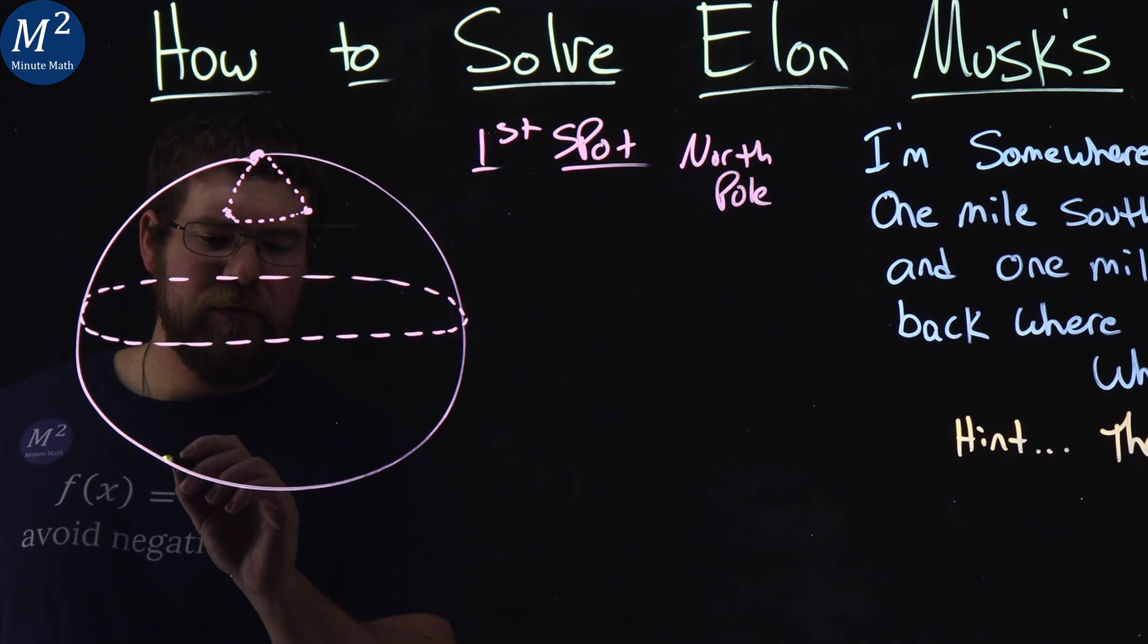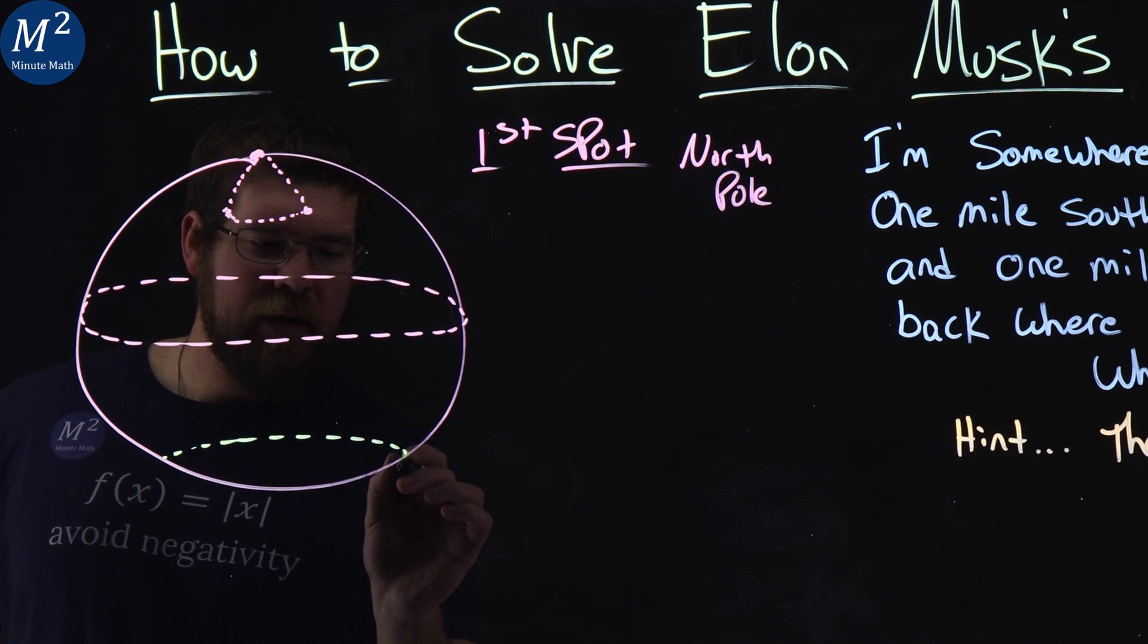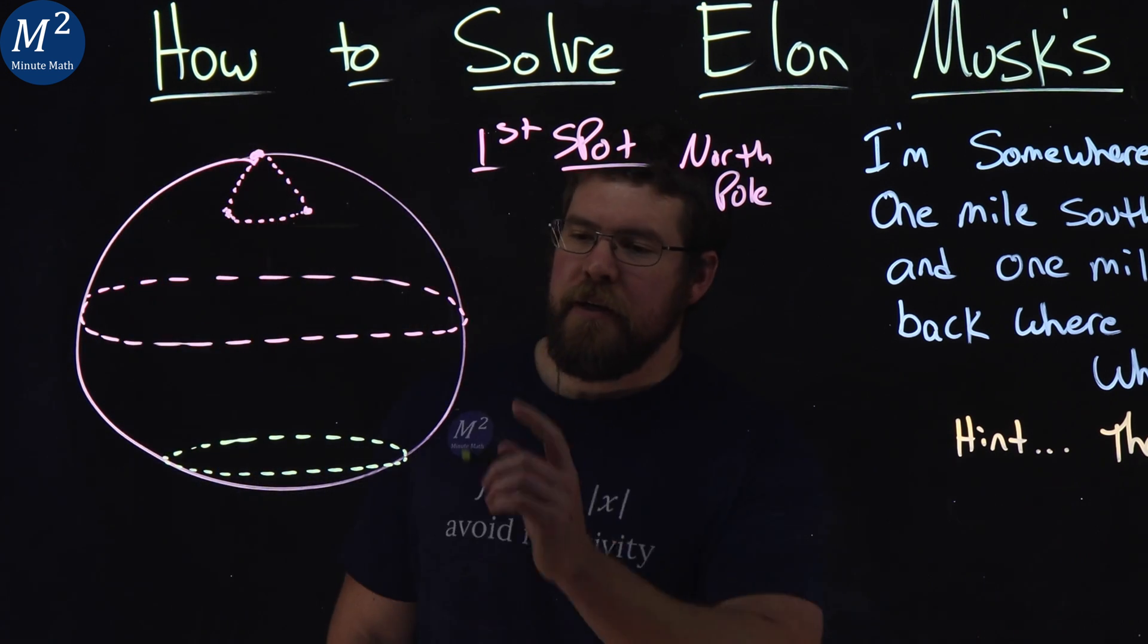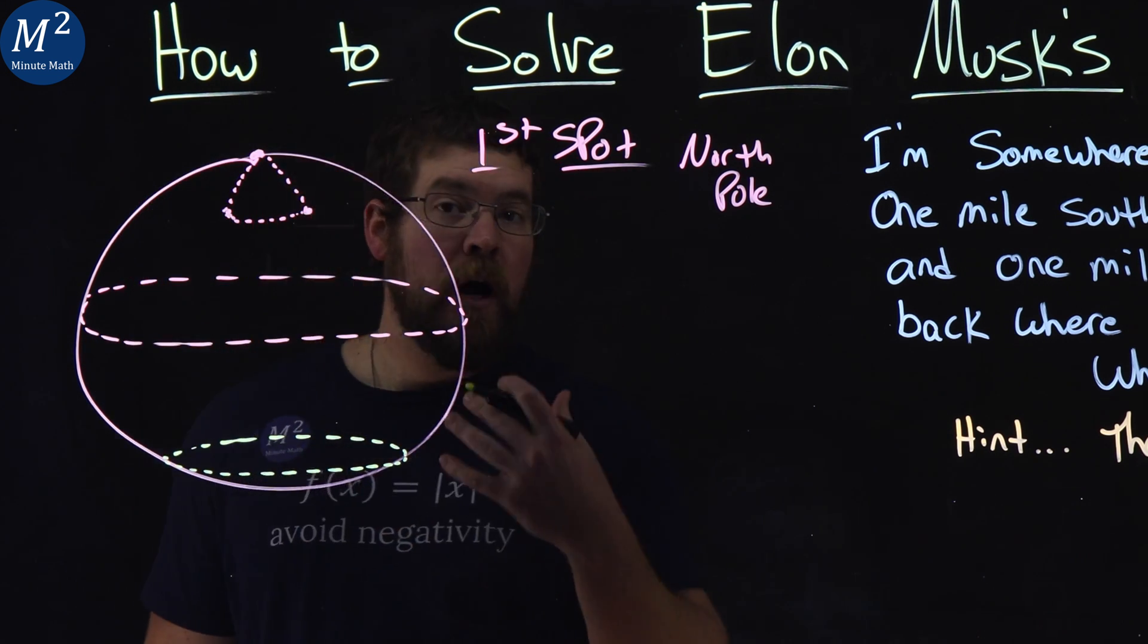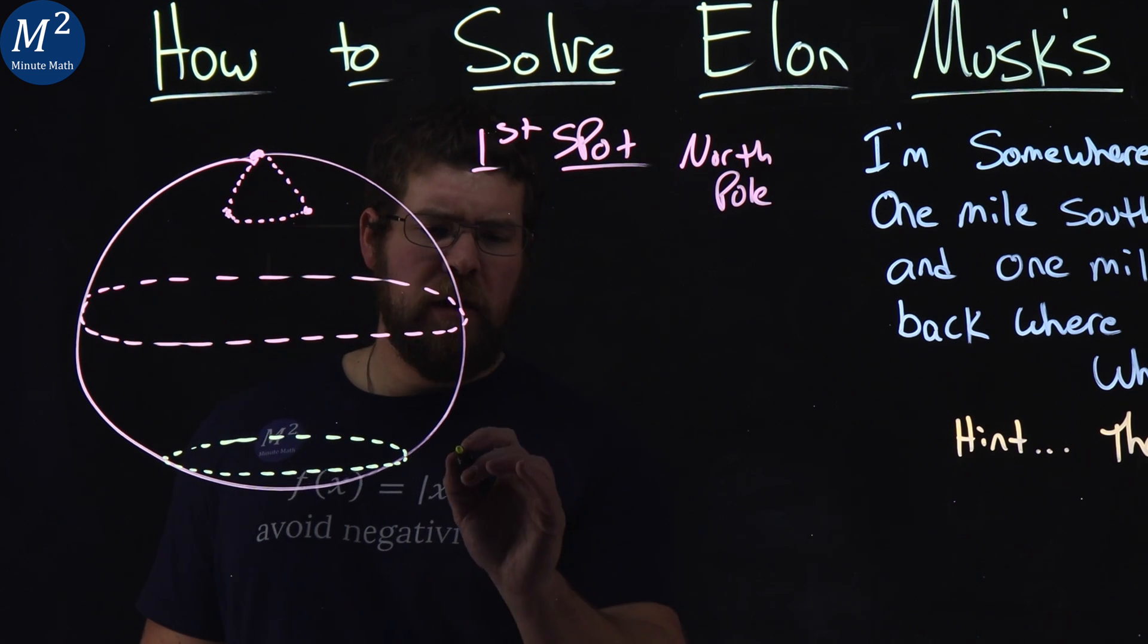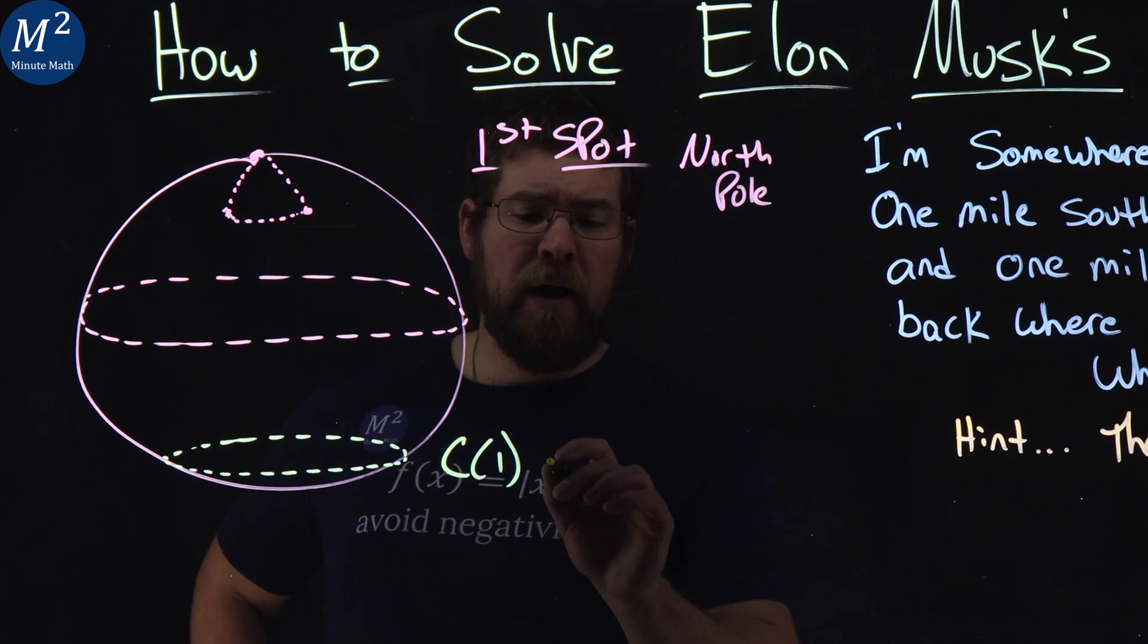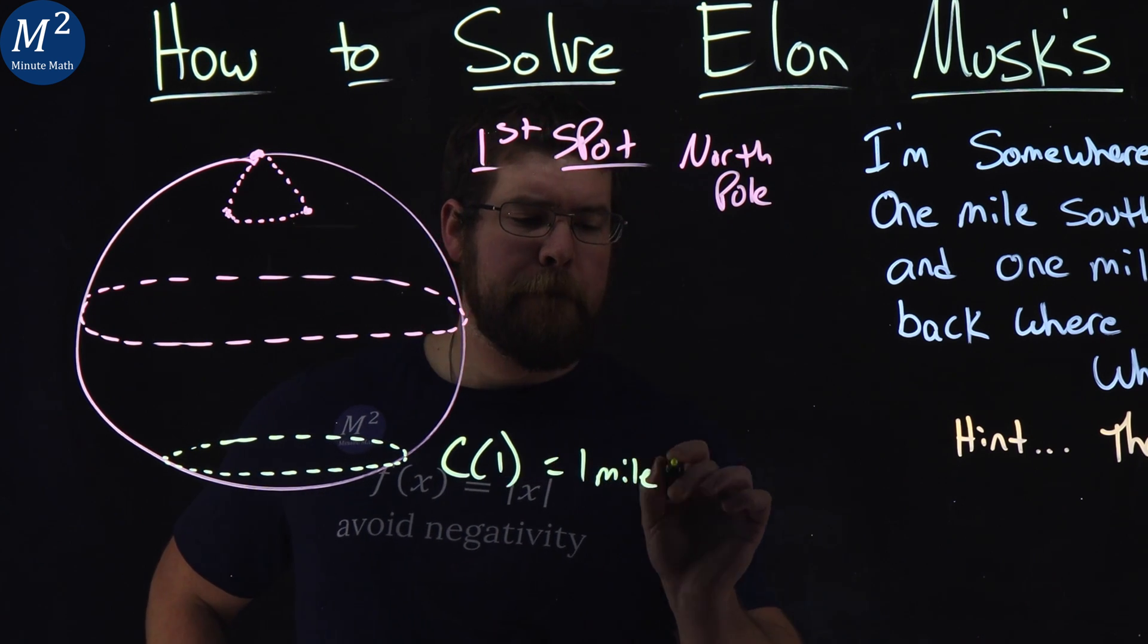So granted, this circle is going here, this line goes across. I should have made it more ovally the other way, but imagine this has a circumference, that circle, of one mile. So let's call this C1, and that has a circumference of one mile.